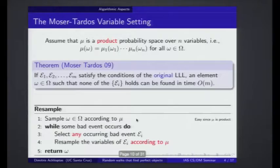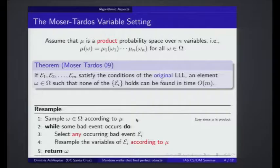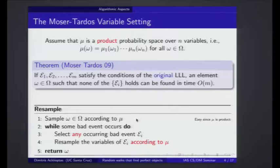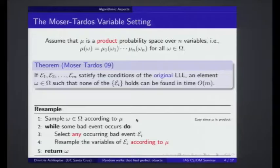Shortly thereafter, Moser was joined by Gabor Tardos, and together they showed that they can make the Lovász Local Lemma algorithmic in a pretty general context. Their context is that the probability measure is a product measure. You have the set omega, and you assume that omega has some kind of decomposition into variables. For example, you can have n Boolean variables — 0,1 — giving 2^n possible configurations. The measure is a product measure: each variable has some probability distribution, and the measure is generated by sampling independently from those different distributions. The theorem is that if you have such a probability measure and your events satisfy the conditions of the original LLL, then by doing the obvious generalization of the algorithm, you can find an elementary event such that none of the bad events holds in time proportional to the number of events.